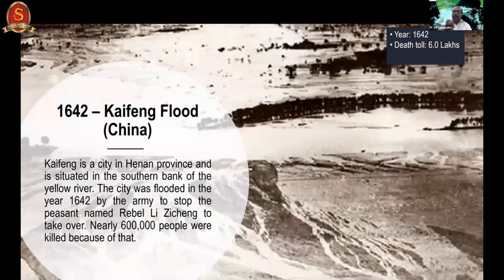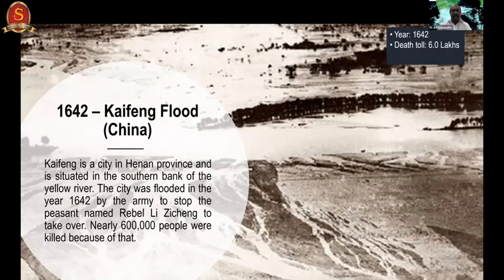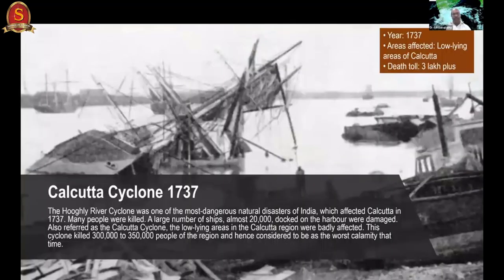A flood can kill 6 lakh people. In recent days, the death toll from floods and cyclones is less compared to those earlier times. The 1737 Calcutta cyclone killed around 3 to 3.5 lakh people in and around Calcutta.